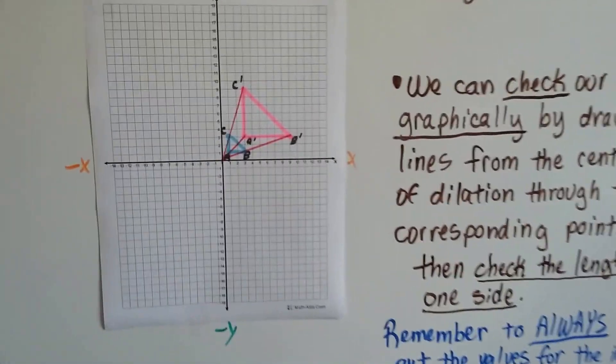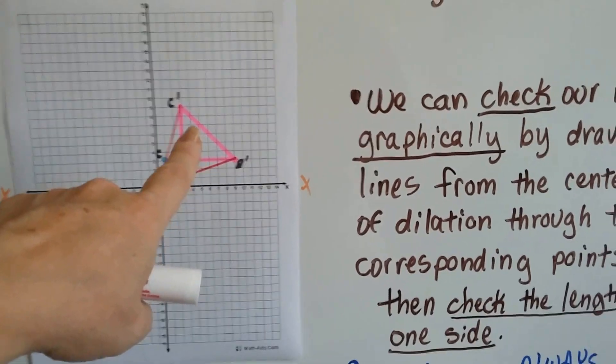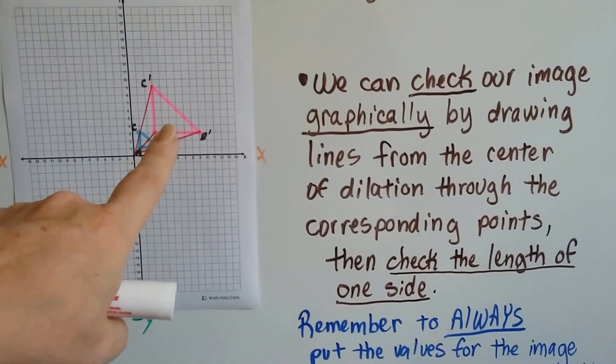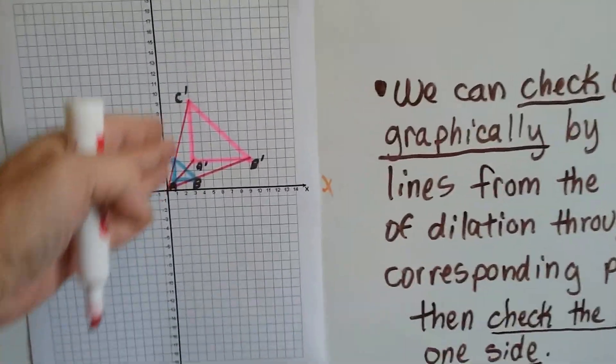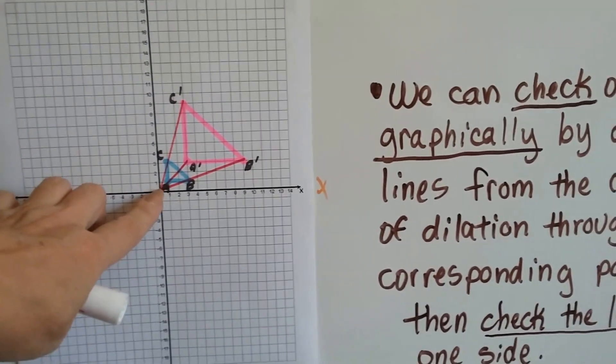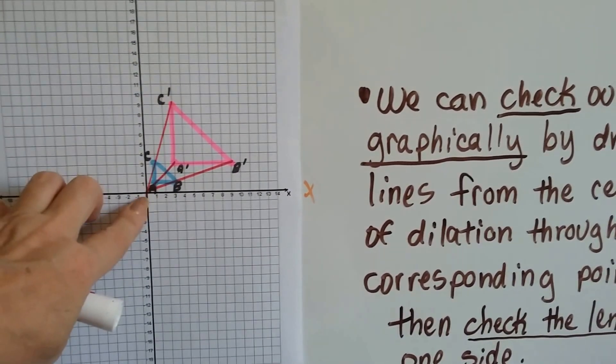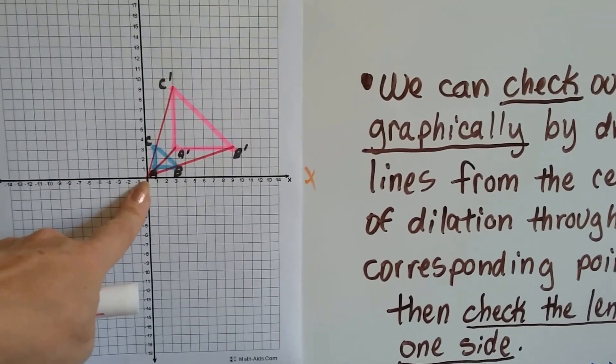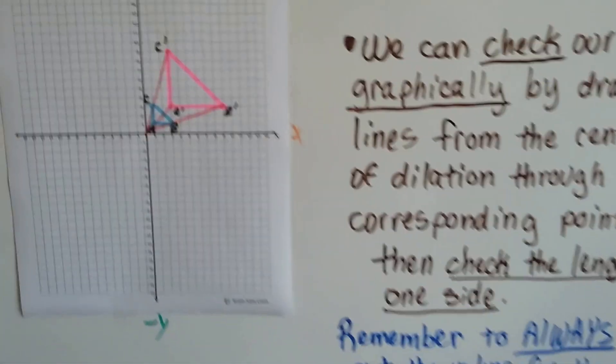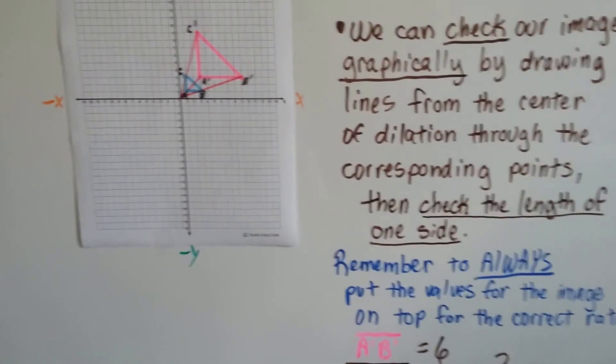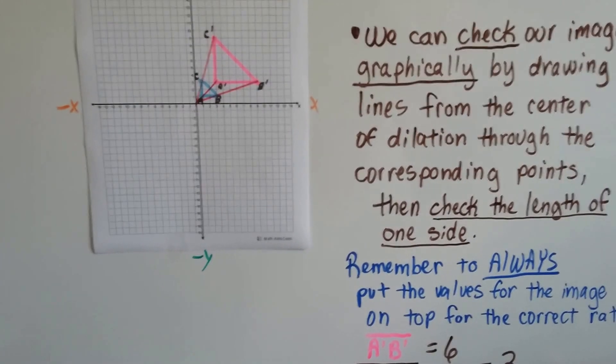We graph the dilated image, we connect the lines, and this is what we get. We can check our image graphically by drawing the lines, these red ones I drew, that connect A to A prime, B to B prime, and C to C prime from its center of dilation, the origin, through the corresponding points.